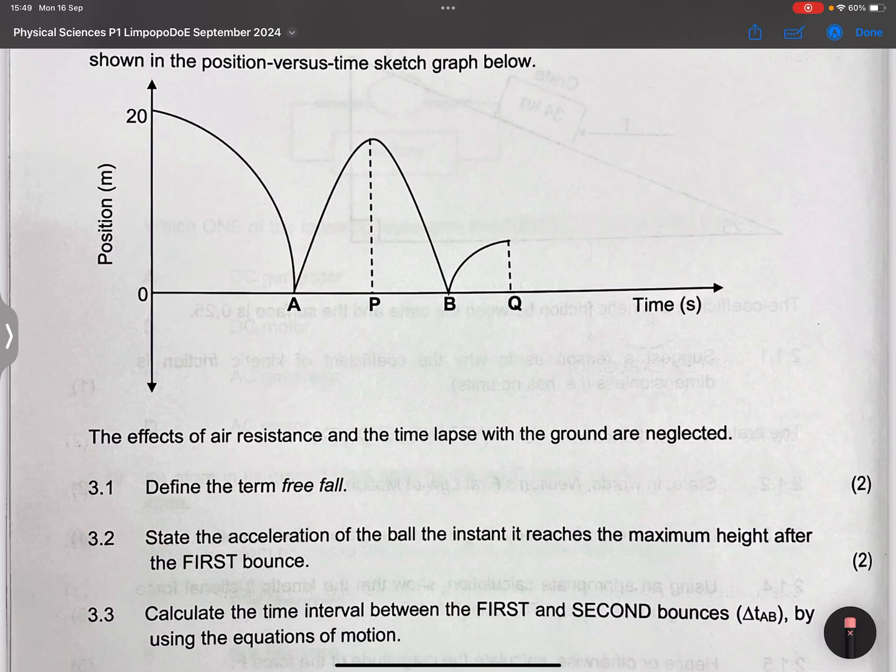Firstly they say define the term free fall and if I may advise ladies and gents please just get to know your definitions. Please, otherwise you get to lose three marks. Define the term free fall. We know that this is the movement of an object under the influence of gravitational force only.